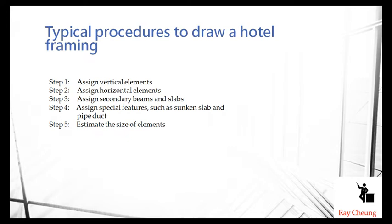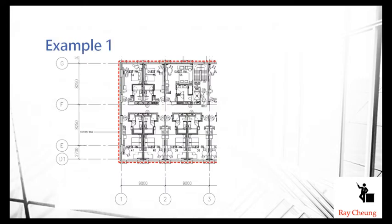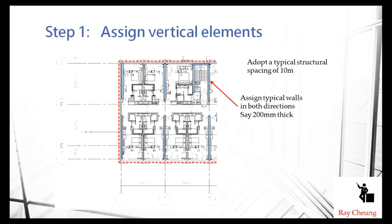First of all, I will give you some typical layout plan like this one. You need to assign the vertical elements first. This is the first step. Remember, normally the vertical elements will be between two rooms, two guest rooms, and also near the staircase or core wall. You try to put the structural elements. This is a simple way to provide the structural stability.